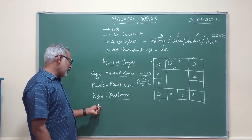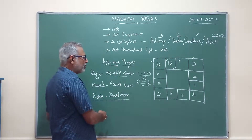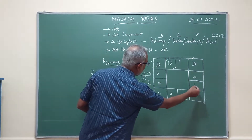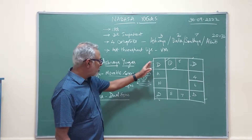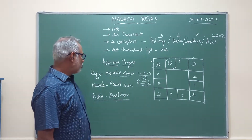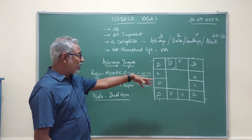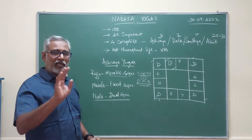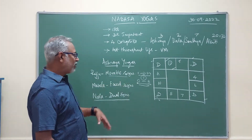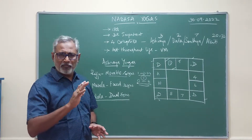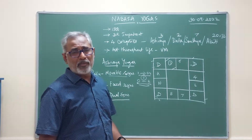Nala Yoga is for the dual signs — same concept. That means Gemini, Virgo, Sagittarius, and Pisces. If these signs are having planets and no other planet is anywhere else, and if the ascendant also is placed in these signs only, then the yoga is fully there. So what do you actually get from these yogas — the results?